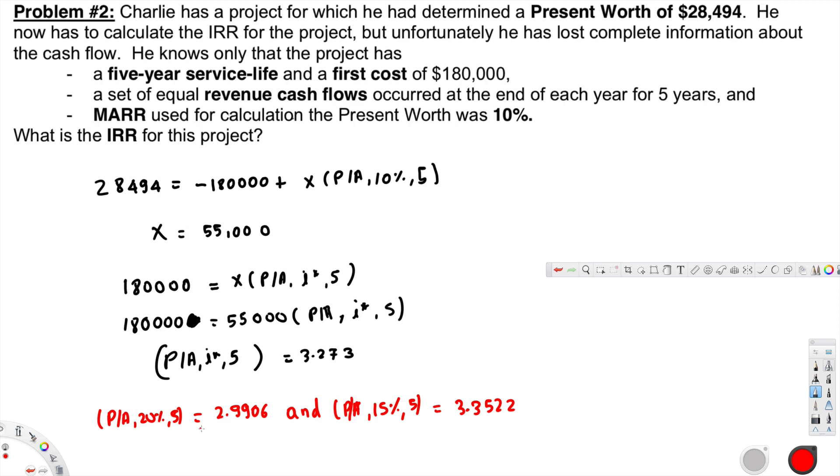We have 20%, 15%, and these two values are not exactly the same, so we do linear interpolation. If you do the linear interpolation for these values, you will get i* to be 16.09 percent, and that is our IRR. That is what they are asking for - the IRR for this project is 16.09 percent, and that's how we solve this kind of problem.